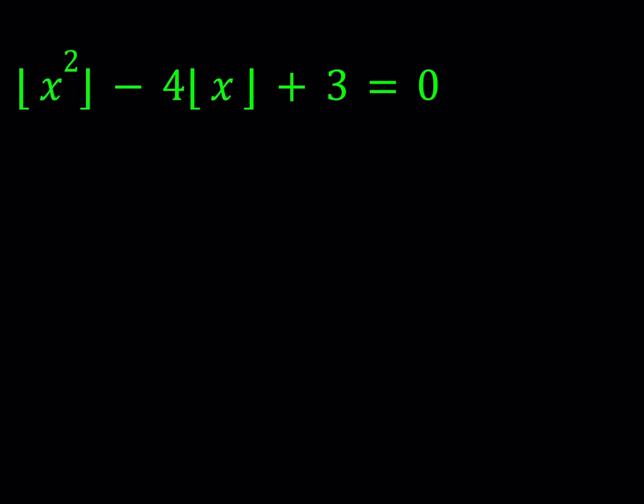So we have the floor value of x squared minus 4 times the floor value of x plus 3 is equal to 0. And we're going to be solving for values of x.